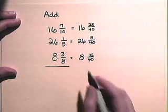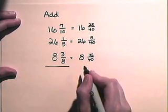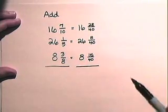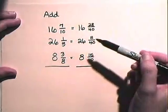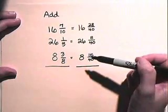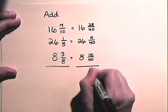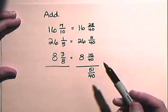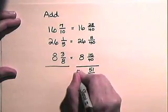So, now we can add these numbers. We will add the fractions first and then we will add the whole numbers. 28 plus 8 plus 15 is 51 and 16 plus 26 plus 8 is 50.